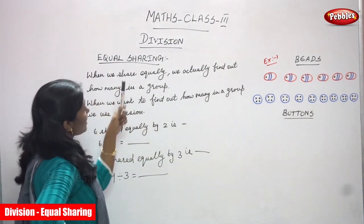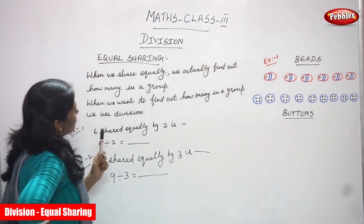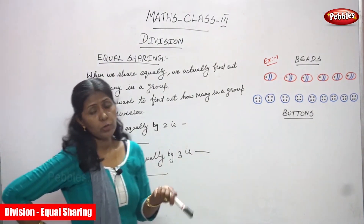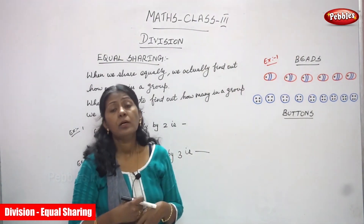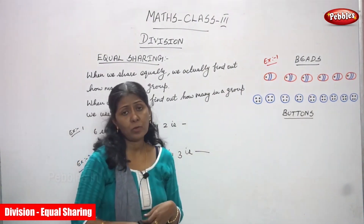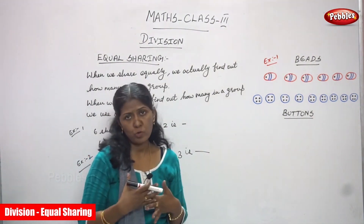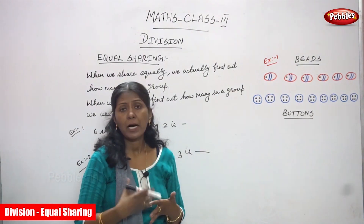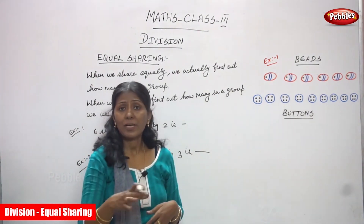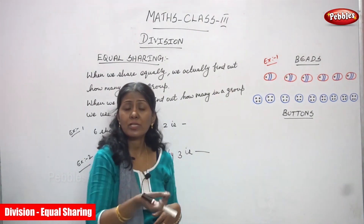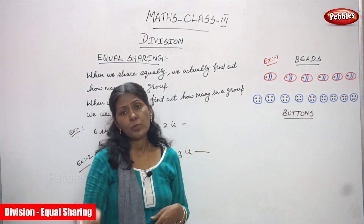When we share equally, we actually find out how many in a group. For example, if you want to give a chocolate to your friends — suppose I am having 10 chocolates — I want to share the chocolates equally to my students. So 5 students are there, I have to share 2 chocolates each. That is what equally share.